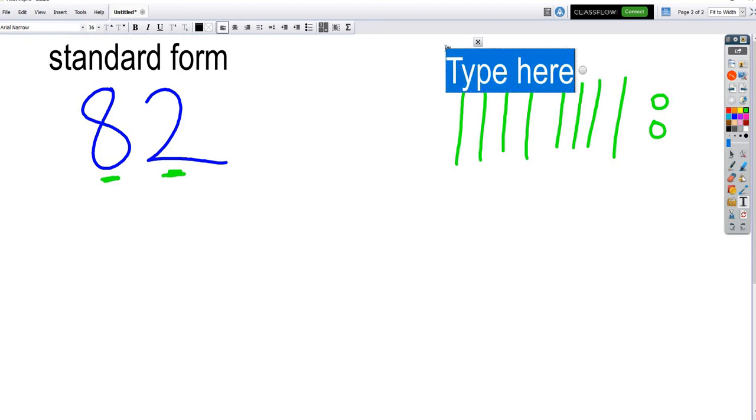The name for when you write it with blocks, we call that a quick picture, or a quick pick. Or sometimes we even call it a model. So we have standard form is when we just write a number, when we just use the numbers to do it. And then a quick pick or a model is when we use the blocks and we draw a picture.